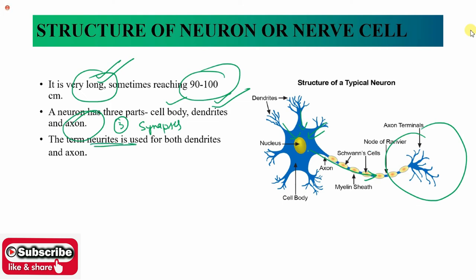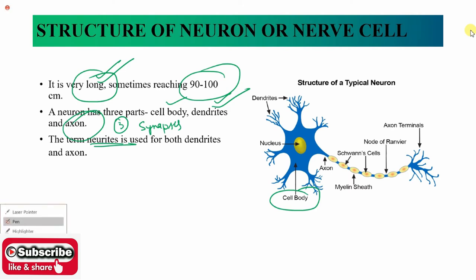Now let's understand the cell body. In this cell body, the nucleus is present in the center. If a cell is very metabolically active, it depends on its cytoplasmic composition. If a cell has a lot of metabolic activity, it needs a lot of energy, which means it needs a lot of mitochondria — more mitochondria means more ATP production, which means more metabolic activity can be performed.